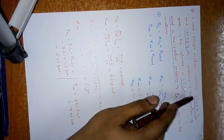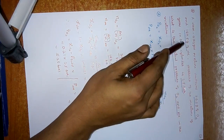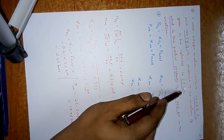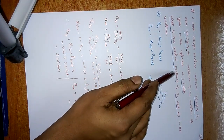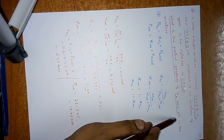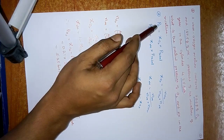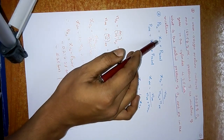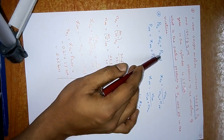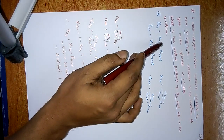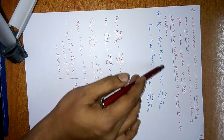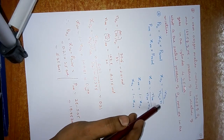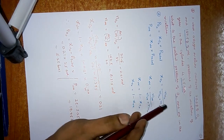A neon-oxygen mixture contains 70.6 grams of oxygen and 167.5 grams of neon. Pressure of the mixture in the cylinder is 25 bars. What is the partial pressure of oxygen and neon? Using partial pressure = mole fraction × total pressure. Mole fraction is the ratio of number of moles of a component to total number of moles.